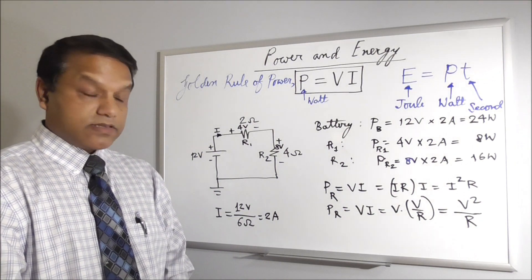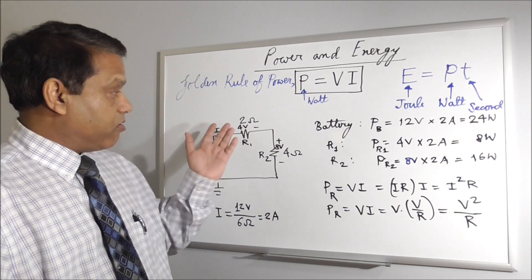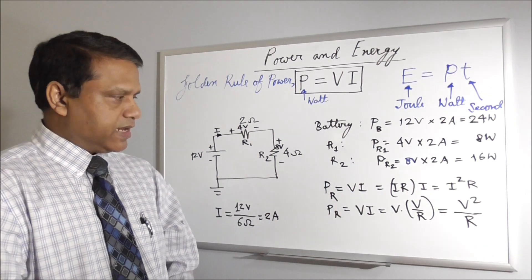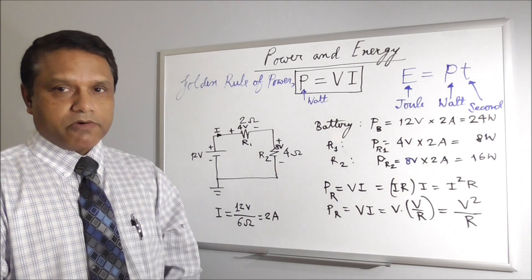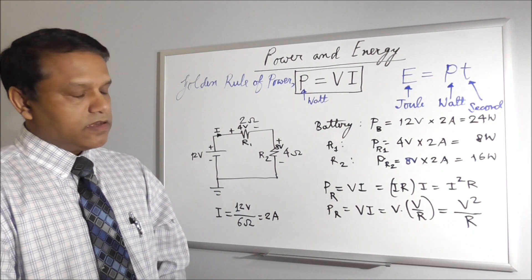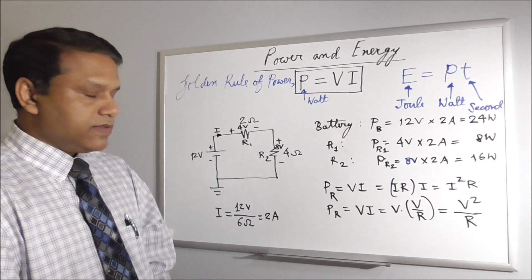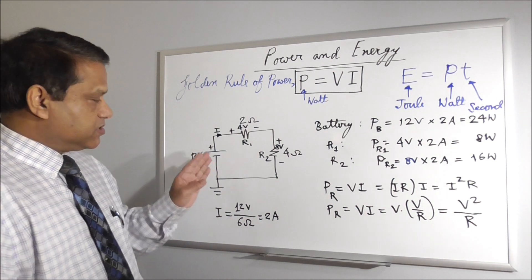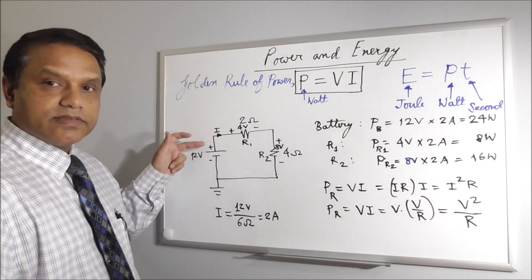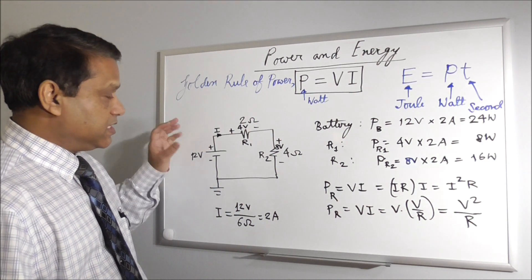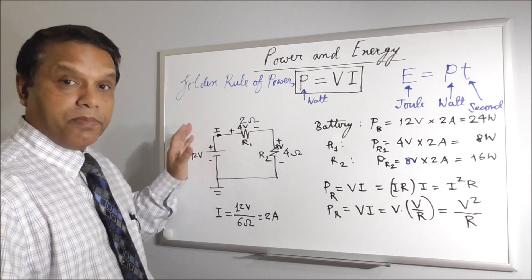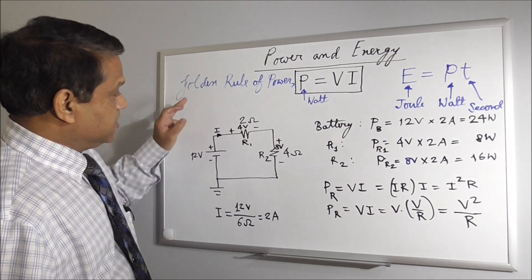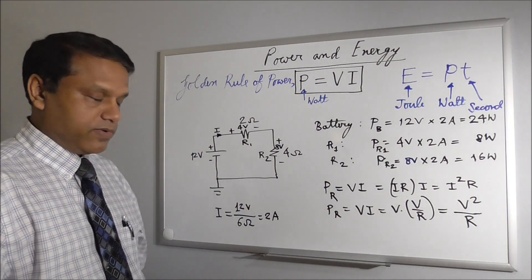And we have also discussed power supplied and power consumed. We need to discuss a bit more on that topic, like who is supplying power or who is consuming power. The general rule is, if you see current is coming out of the positive terminal, that means the terminal which has higher voltage, that is giving away power, supplying power. So this is supplying power because current is coming out of the positive terminal.